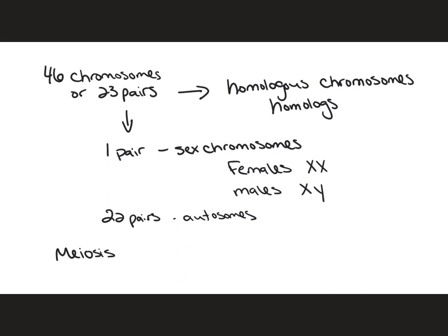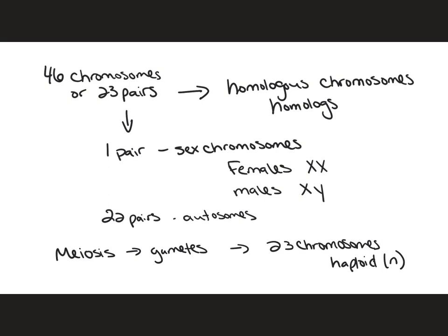The remaining 22 pairs are referred to as autosomes. Since meiosis results in the formation of gametes, the result of meiosis is going to be cells that contain 23 chromosomes — half the number of chromosomes that we see in a normal cell. This is referred to as haploid or n, where 46 chromosomes — the total number in a human cell — is referred to as 2n or diploid.